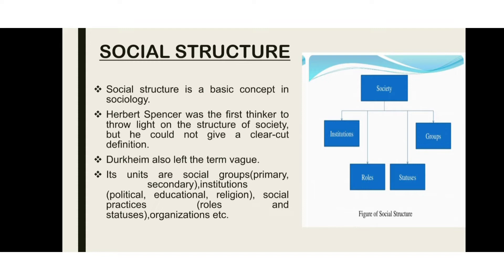The units of Social Structure include Social Groups — Primary Groups and Secondary Groups. These types of groups are classified on the basis of different factors. The classification of Primary and Secondary Groups is attributed to C.H. Cooley. Other units include Social Institutions, Social Practices, Roles, and Statuses.